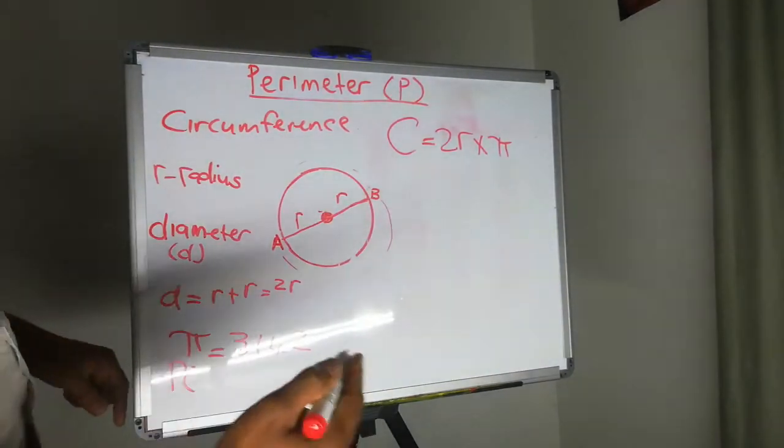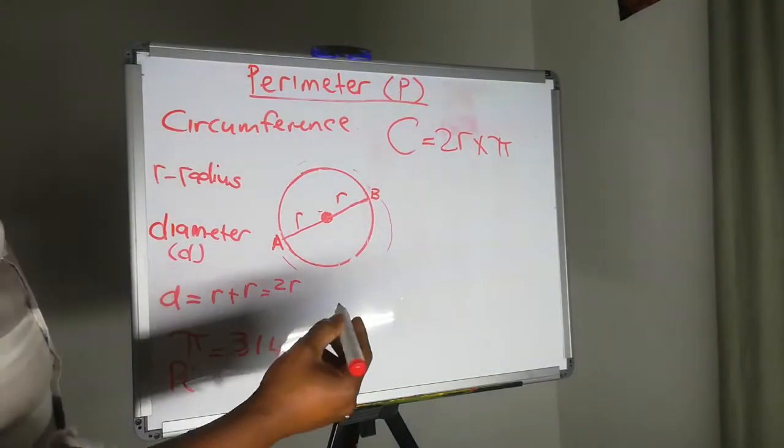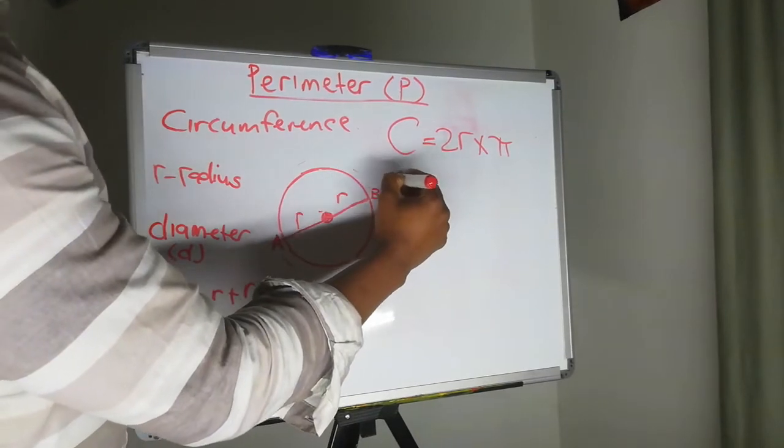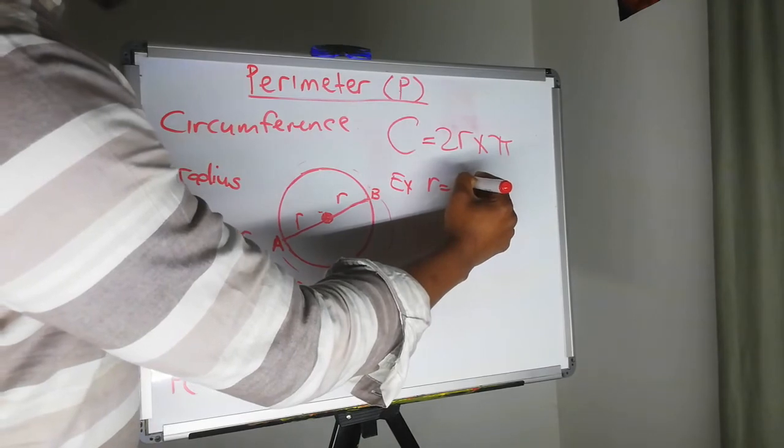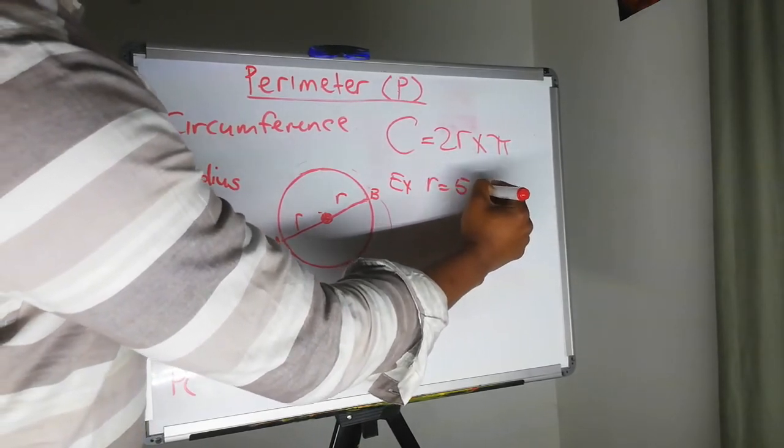So let's look at an example. Let's say in our example that the radius is, let's say, five centimeters.